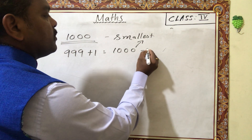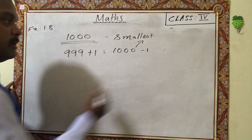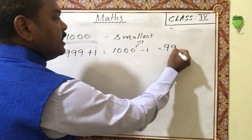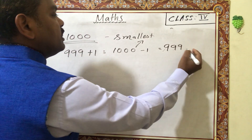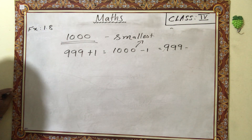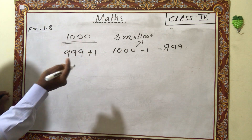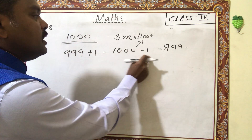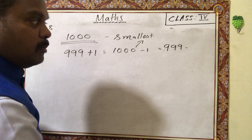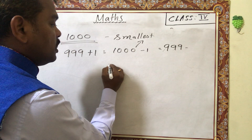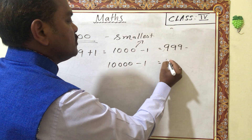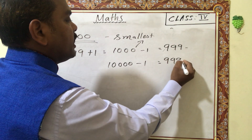So if you subtract 1, then 1000 minus 1 is 999. 999 is the largest three-digit number. So one less than 1000 is 999. Next, one less than 10,000 is 9999 — that is 9 appearing four times.